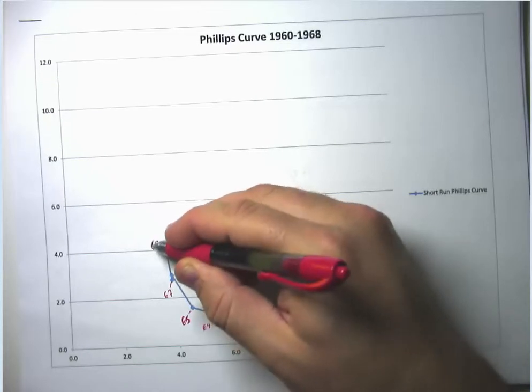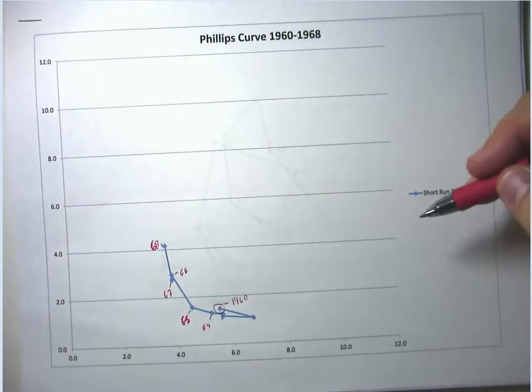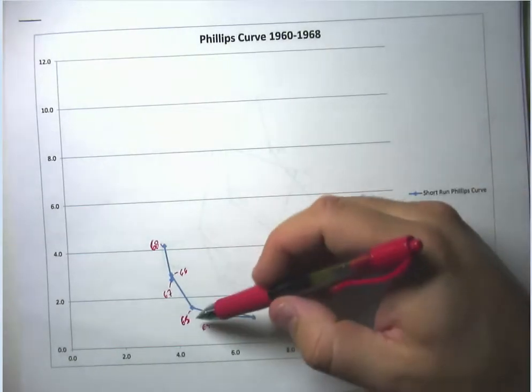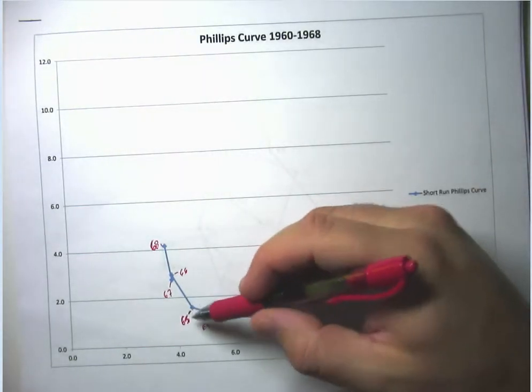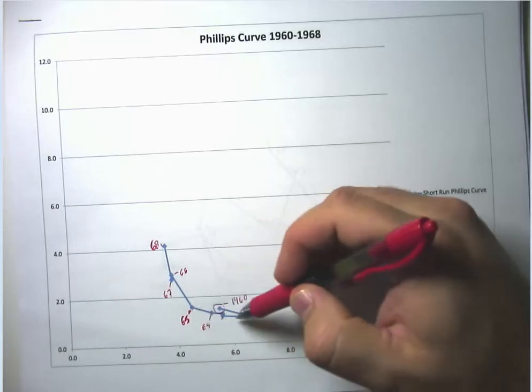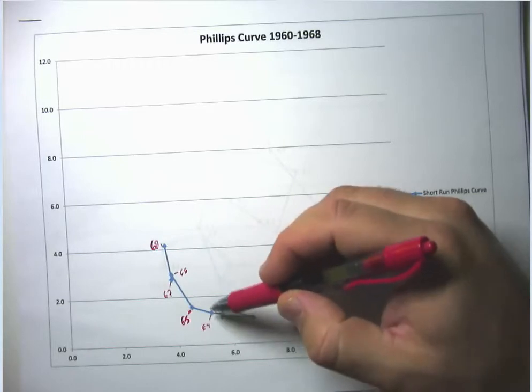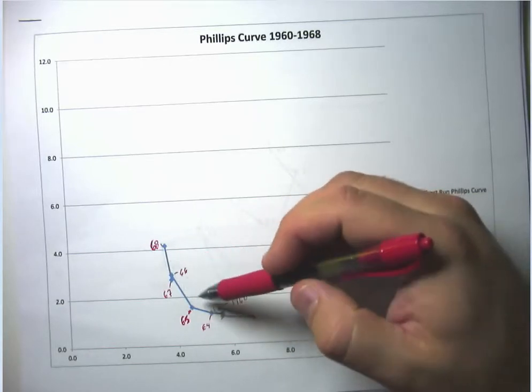You can see that this looks pretty much like we would expect a Phillips curve to look. And something that was sort of famous in the history of economists at least is that as we're going through the 60s, one economist Milton Friedman sort of says, hey, wait a second here.